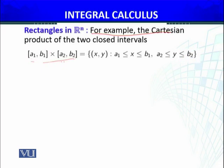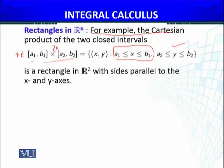A rectangle in R2 is the Cartesian product of two intervals, which equals all ordered pairs (X, Y) such that X belongs to [A1, B1] and Y belongs to [C, D]. We write this as A1 ≤ X ≤ B1 and C ≤ Y ≤ D. This is what we call a rectangle in R2.